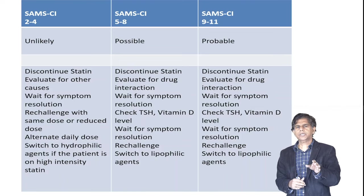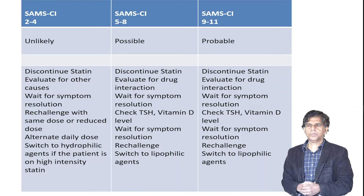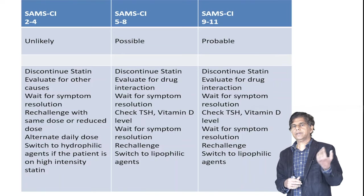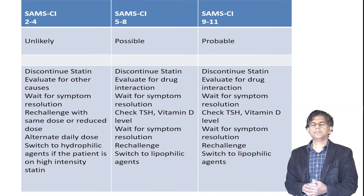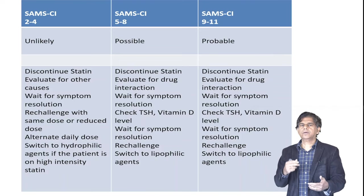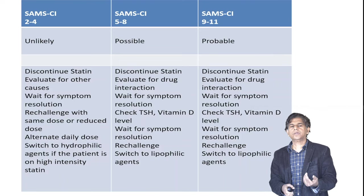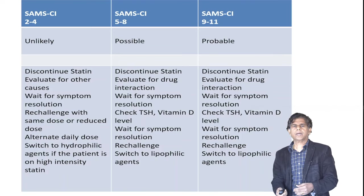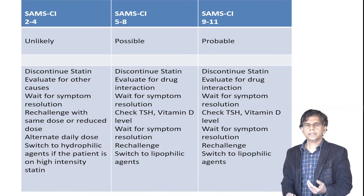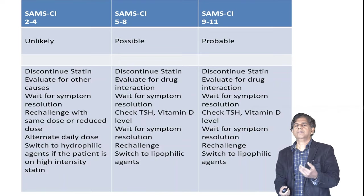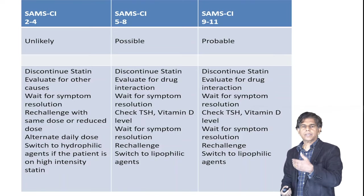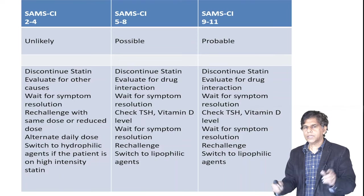Always check TSH and vitamin D levels. Studies show that low vitamin D increases the risk of muscle-related complications, so replace it if low. Wait for symptom resolution, then re-challenge with the same dose. If still not working, switch to a hydrophilic agent — pravastatin, fluvastatin, or pitavastatin — which penetrate muscle tissue less. For a SAMS-CI score of 9–11, this is most likely statin-related: stop, wait for resolution, and re-challenge or switch to a hydrophilic agent.